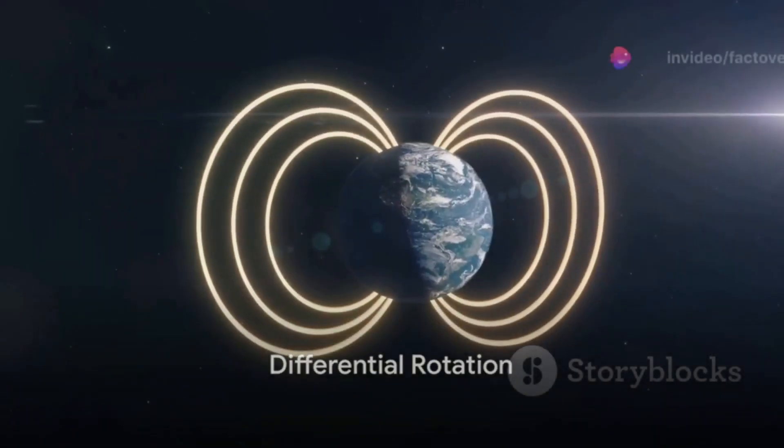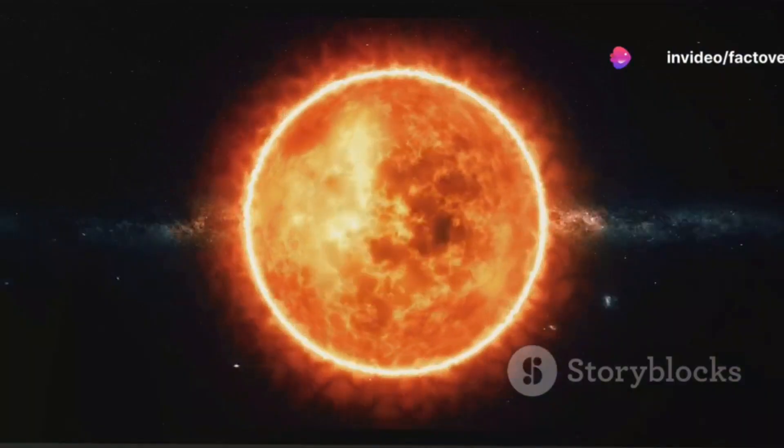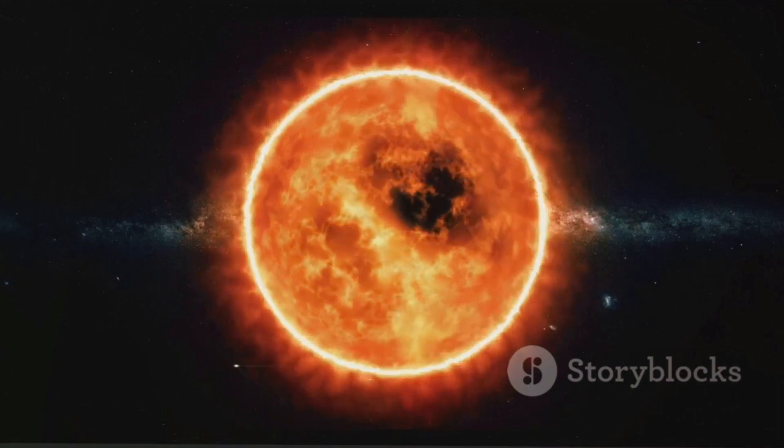This variation can cause the star's magnetic fields to twist and tangle, leading to phenomena such as solar flares or the creation of star spots, which are akin to the sunspots we observe on our own sun.